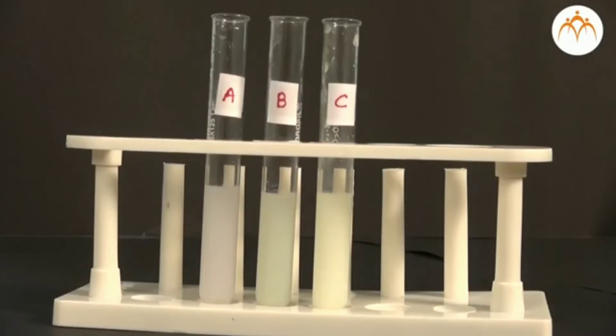In test tube A, precipitate formed is white in color. In test tube B, precipitate formed is light yellow in color. In test tube C, precipitate formed is dark yellow in color. The color indicates which ion exists in a particular solution. White color indicates that there must be chloride. Light yellow color indicates bromide and dark yellow color indicates iodide in the solution.